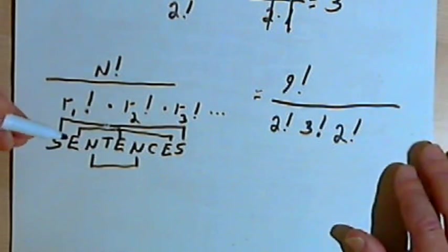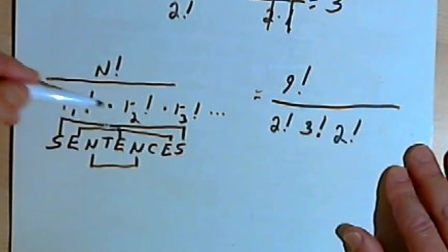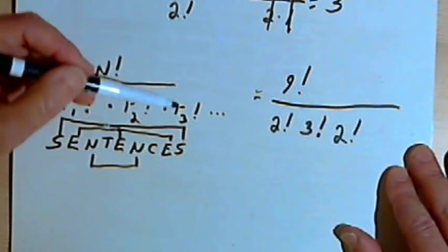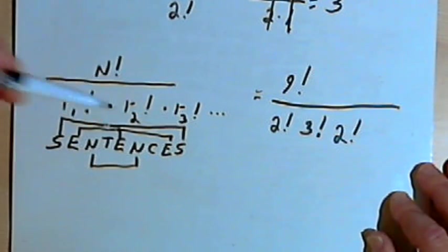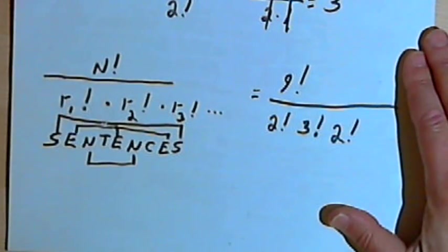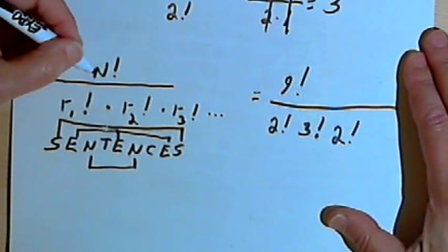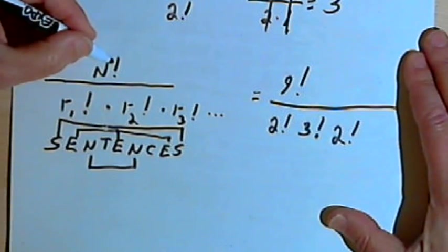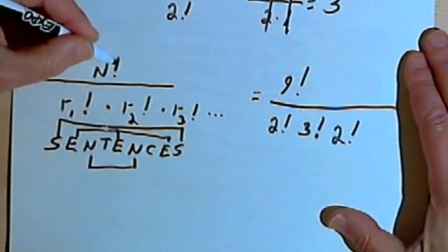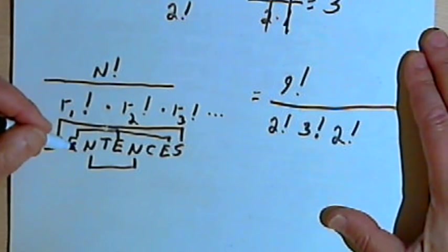Now, if I had a word with even more repeats, maybe a fourth letter that repeated or a fifth letter that repeated, I would just use this formula, but I would also have an R-sub-4 and an R-sub-5 and so on. So once again, the general principle works like this. Take the total number of elements that you have in your set, regardless of whether they repeat or not, and use that number as your numerator, followed by the factorial sign. So that's going to be your N factorial.